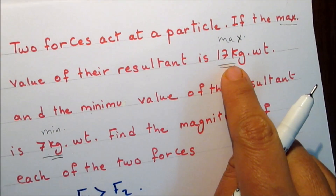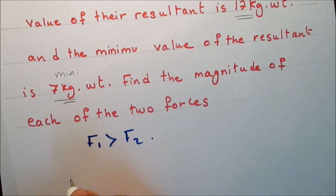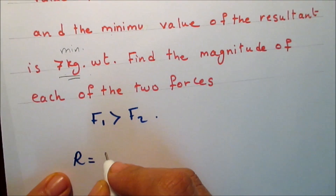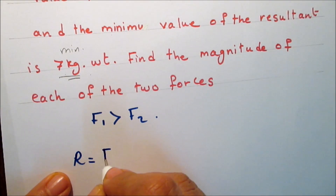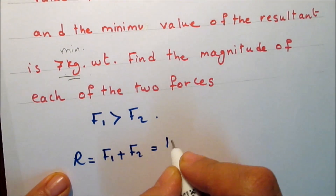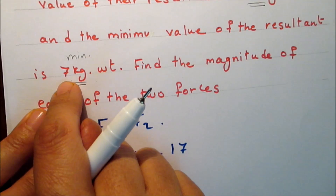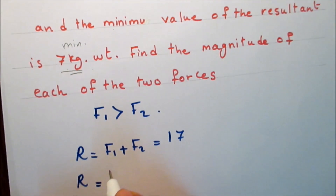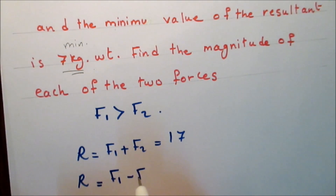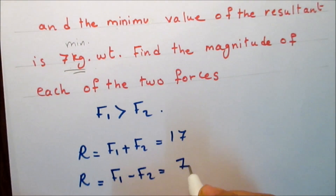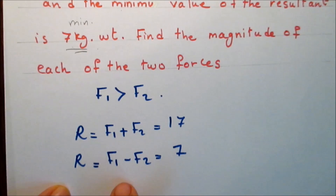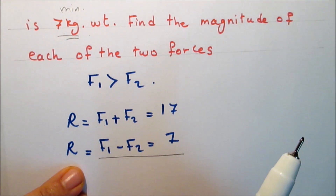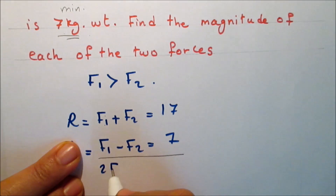The maximum resultant gives R equals F1 plus F2 equals 17 kg-weight. The minimum resultant gives F1 minus F2 equals 7 kg-weight. We now have two equations. Adding the two equations: F1 plus F1 gives 2·F1, and F2 minus F2 cancels.